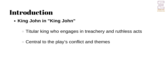King John, the titular character in William Shakespeare's historical play King John, is portrayed as a monarch who engages in treachery and ruthless acts to secure his throne. His actions and motivations highlight themes of power, legitimacy, and the moral complexities of kingship.